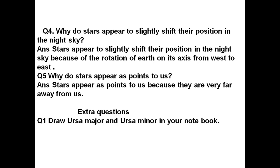These are the question answers of E part. For the extra question, write from the next new page. The question is: draw Ursa Major and Ursa Minor in your notebook. I have already explained all the different types of constellations. You will draw all constellations — Ursa Major, Ursa Minor, Orion, and Cassiopeia — in your science notebook.